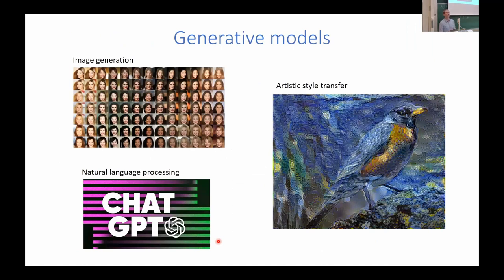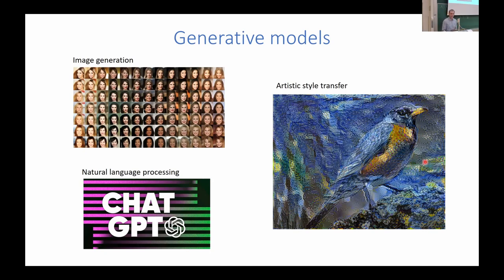Now let me switch gears and talk about deep generative models for crystal structure generation. As you know, generative models in AI have become very powerful — you can use them to generate images, natural language, pictures in the style of a particular artist. The generative model we've been using for generating crystal structures is a variational autoencoder. The way it works is: you have an input vector that could be a description of a crystal structure — the lattice vectors, which atoms, and their positions.